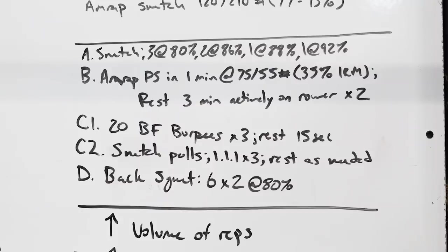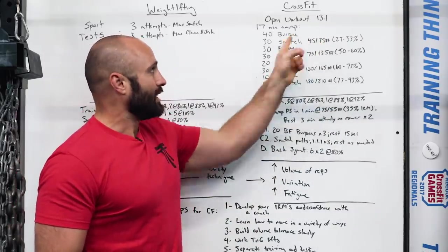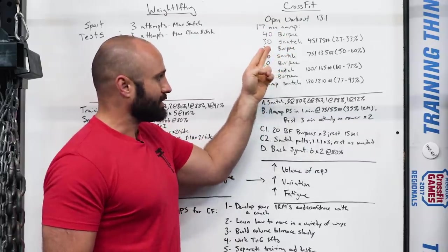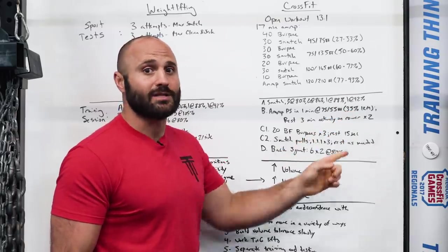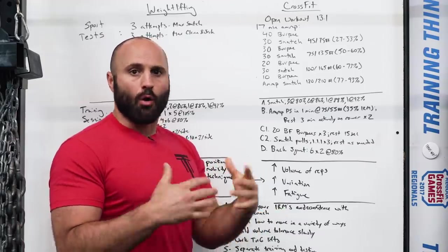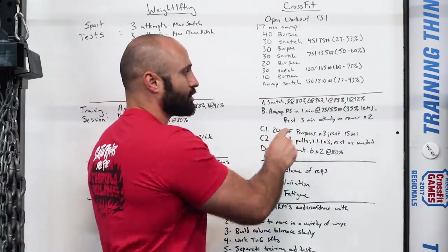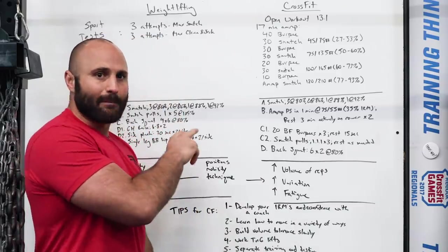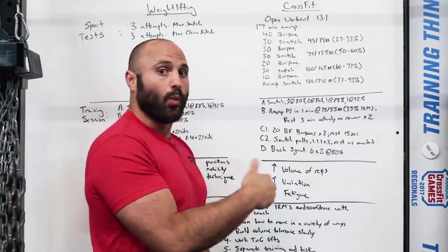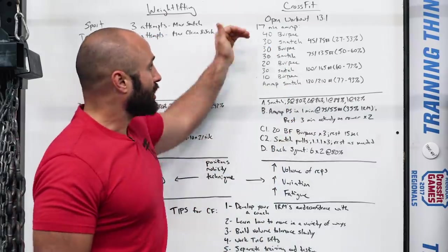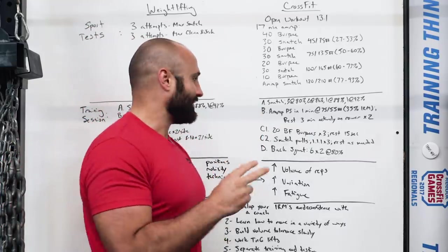For B, AMRAP power snatches in one minute at 75 or 55. I put fixed weights in here to give some sort of a similar type of weight and loading parameter to what you would see in a sports specific test. But if you're not strong enough yet, that could be 35% of your one rep max. After you finish that one minute, immediately into rest three minutes actively on the rower. In weightlifting, you might stop your lift and just sit down and recover fully. Here we're going to actually try to recover while we're working, which is necessary for the sport of CrossFit.